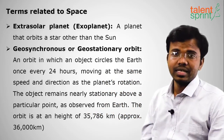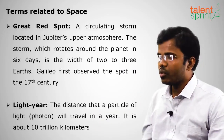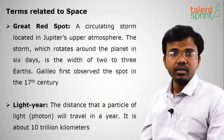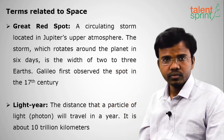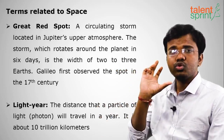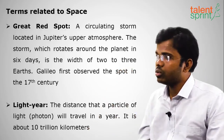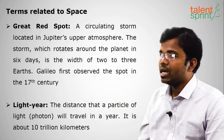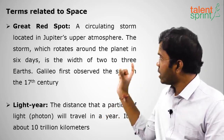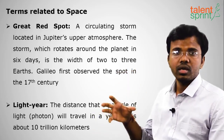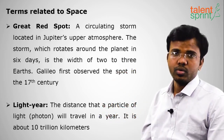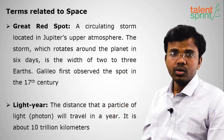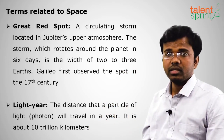The Great Red Spot is a circulating storm located on Jupiter's upper atmosphere. Its width is around two to three times larger than the Earth — this storm itself is enormous. It was discovered by Galileo in the 17th century. A light year is the distance traveled by light (a photon) in one year, which is approximately 10 trillion kilometers.